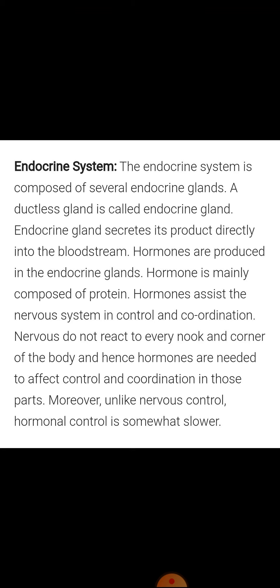In the human body, some glands act in both ways — they perform both exocrine and endocrine functions. This is very important and it is also asked in exams. Such glands — like pancreas, testis, and ovary — are called mixed glands because they perform the functions of both exocrine and endocrine glands. For example, the pancreas acts as an endocrine gland when it secretes the hormone insulin, and it acts as an exocrine gland when it secretes pancreatic juice, which contains digestive enzymes. So this is an example of a mixed gland.